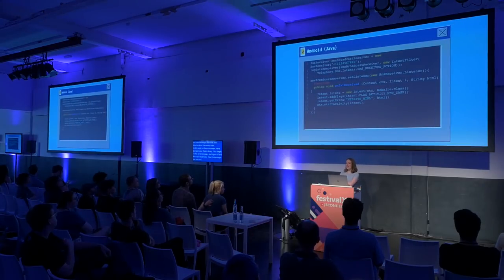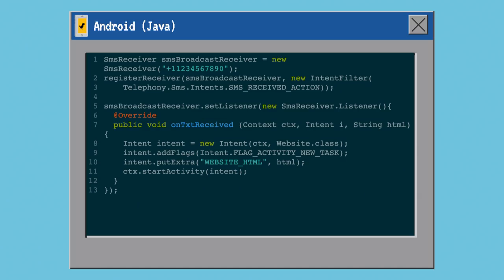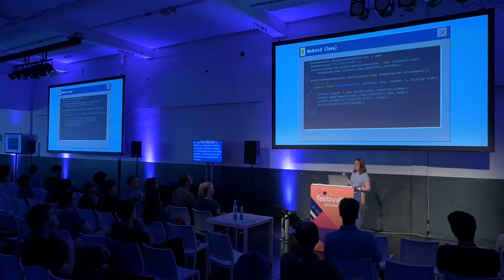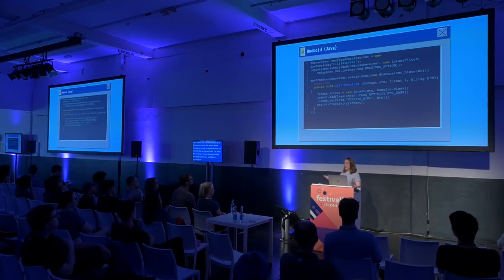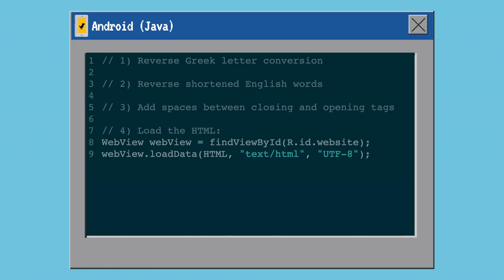Android has a thing called a broadcast receiver, which listens out for certain signals sent within your phone. We've set up a broadcast receiver that listens for messages coming in specifically from the number we own on Twilio. It's listening for that message to come in, then grabbing the text from that message and sending it over to an activity — which is Android's way of saying a new view.